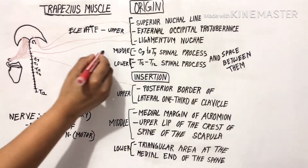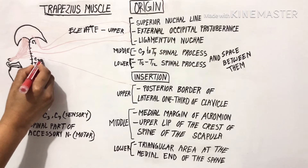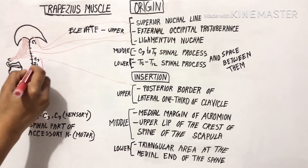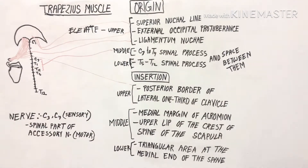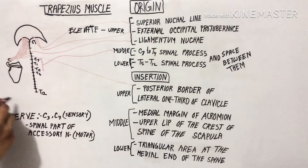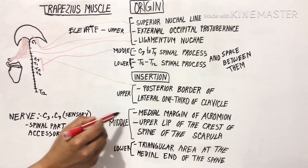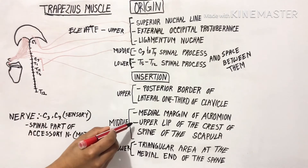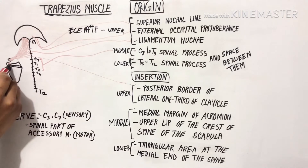Now the middle part: its origin is from the spinous processes of C7 to T4 and the spaces between them. It inserts into the medial margin of the acromion and the upper lip of the crest of the spine of the scapula.